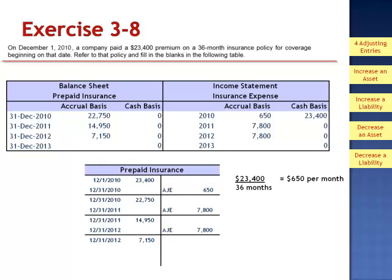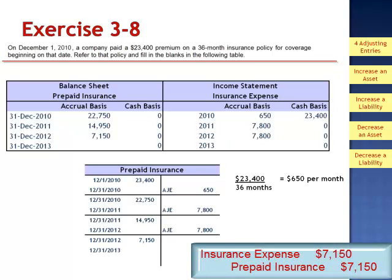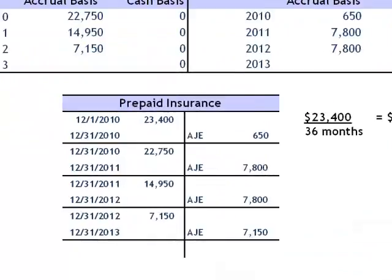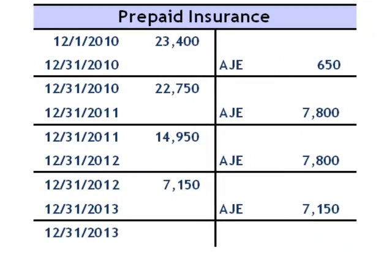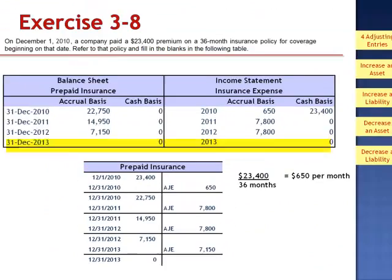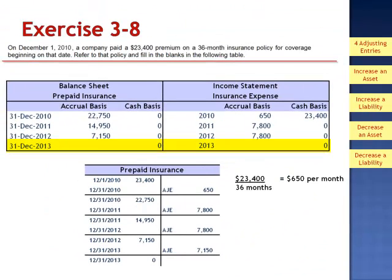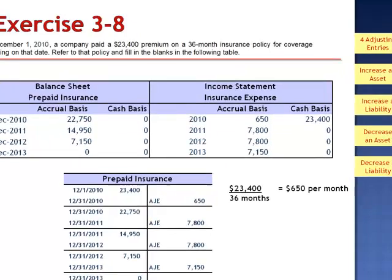During 2013, the remaining 11 months of coverage is used. The adjusting entry is a debit to insurance expense and a credit to prepaid insurance for $7,150, dropping the balance in the asset account to zero. The 2013 financial statements will report a zero balance on the balance sheet for prepaid insurance and 11 months of expense, $7,150, on the income statement.